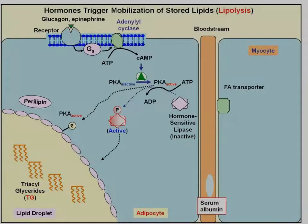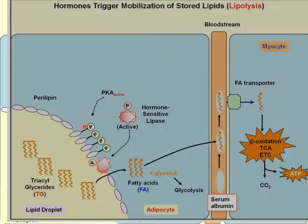When glucagon or epinephrine signaling occurs, it activates adenyl cyclase, which activates protein kinase A, which creates an active lipase. Protein kinase A also phosphorylates perilipin. Once perilipin is phosphorylated, lipases can interact with it and reach in to start cleaving the triglycerides. The resulting free fatty acids move into the serum, attach to albumin, and are transported to the liver or other peripheral tissues.